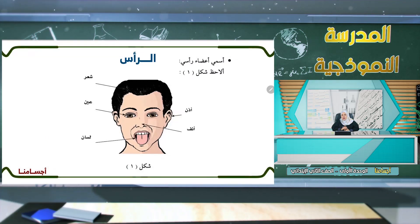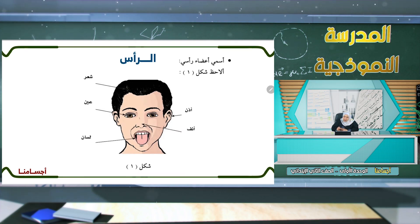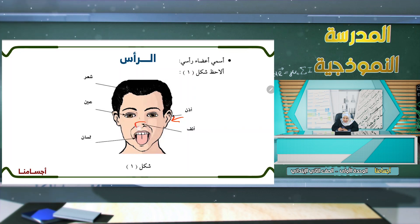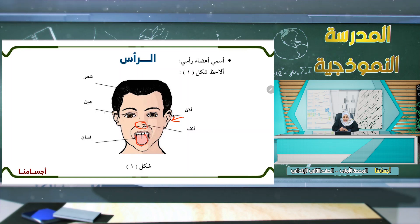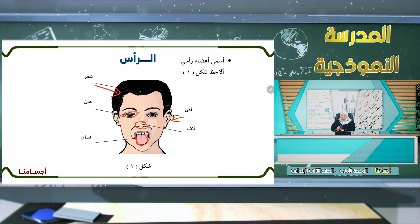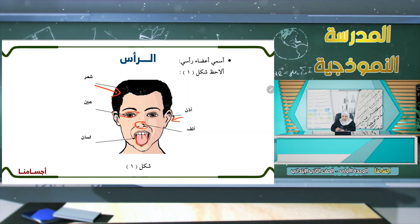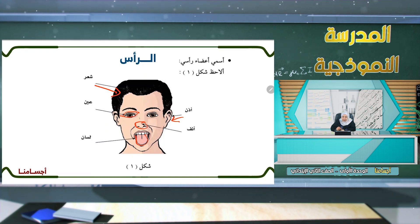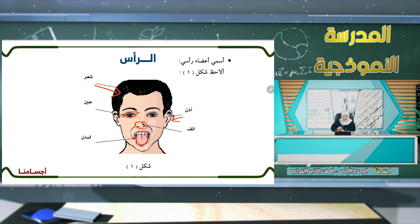أسمي أعضاء رأسي: ما هي أعضاء رأسي؟ أعضاء رأسي هي: أذن، أنف، لسان، عين، وشعر. كل هذه الأعضاء خارجية عدا اللسان. والأسنان واللسان أعضاء داخلية.